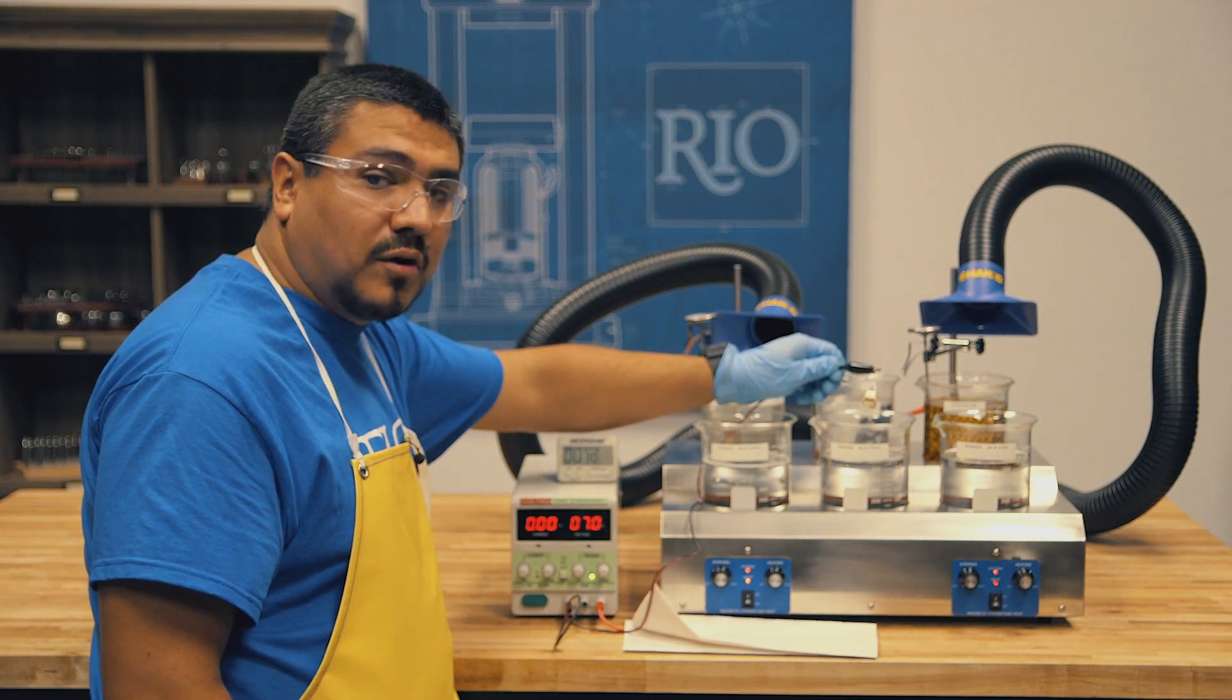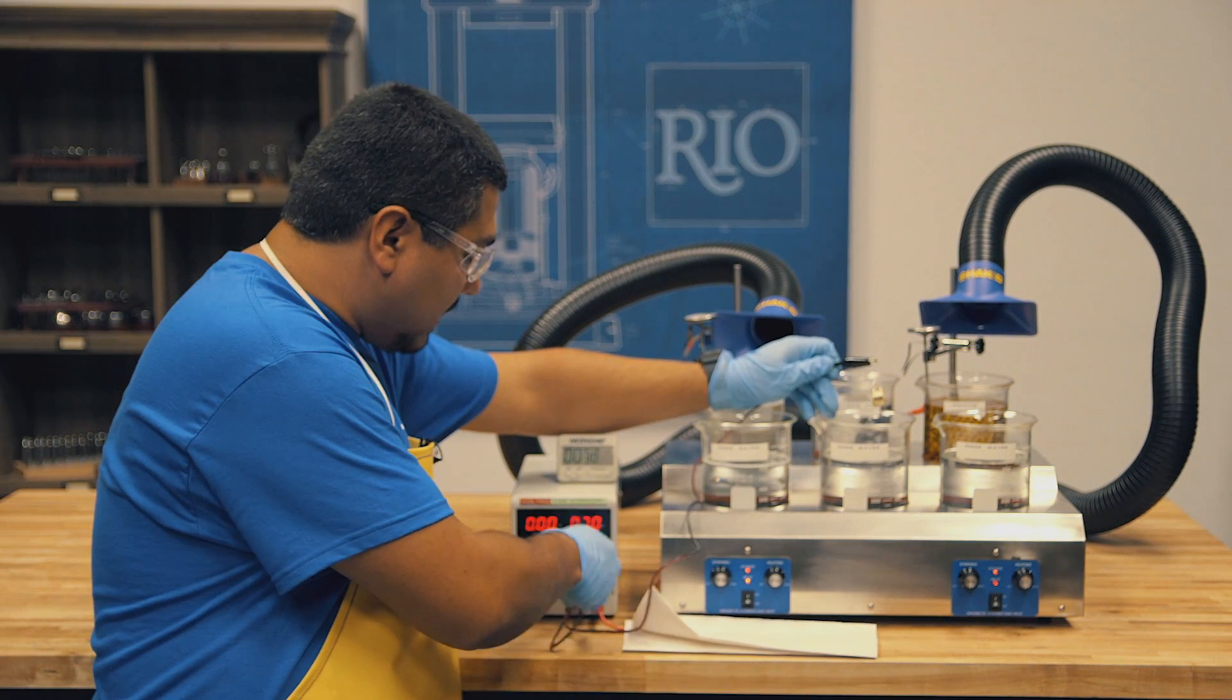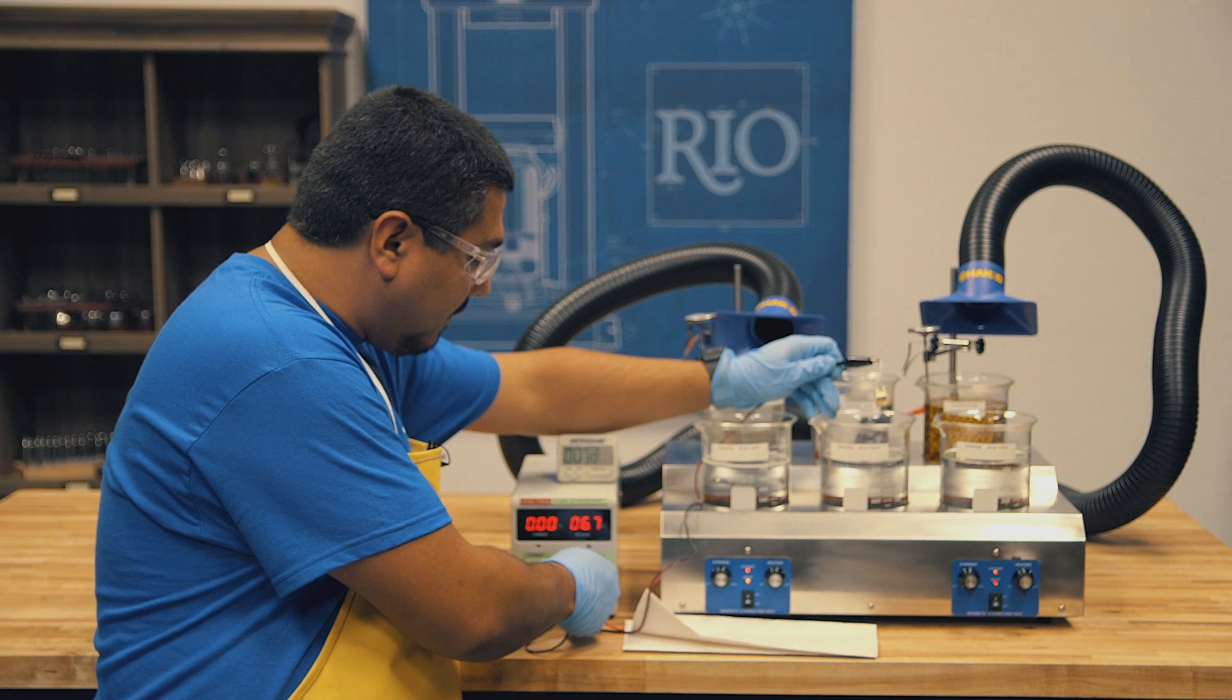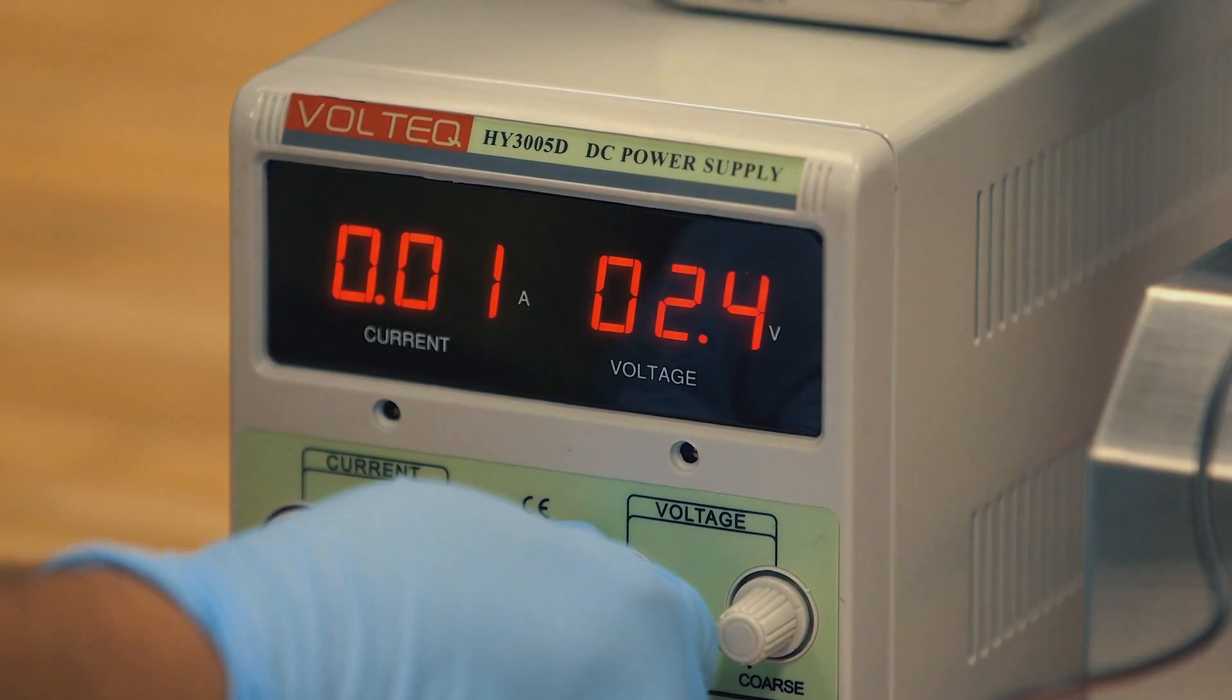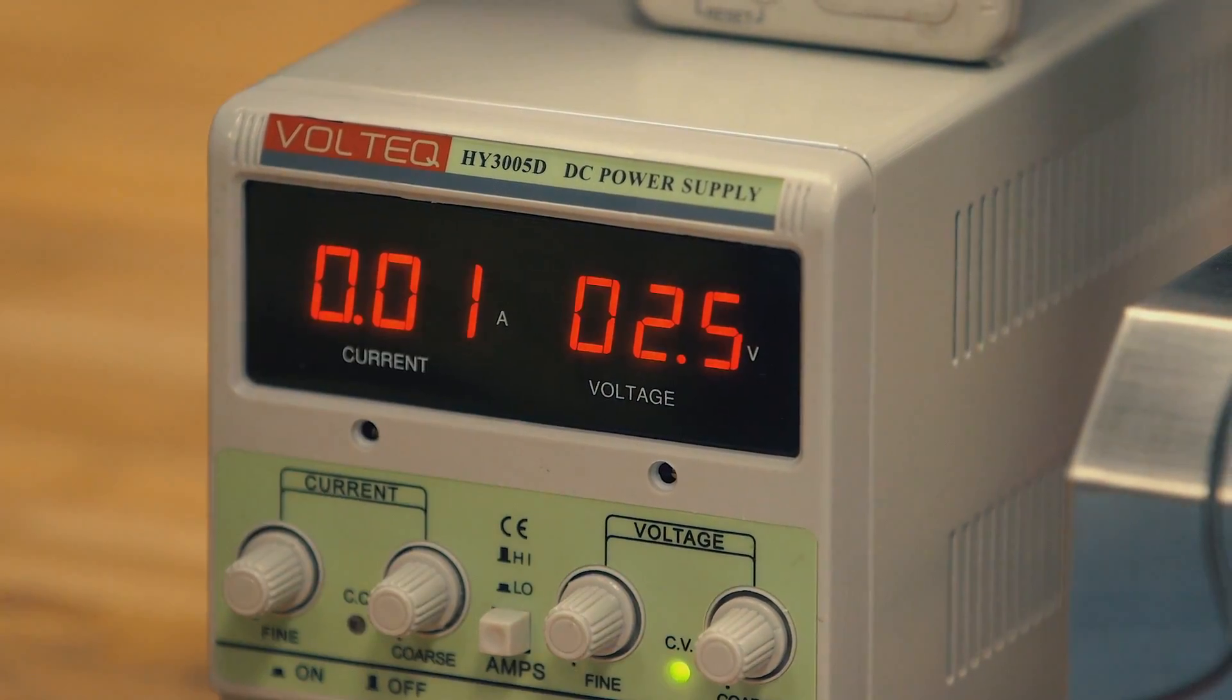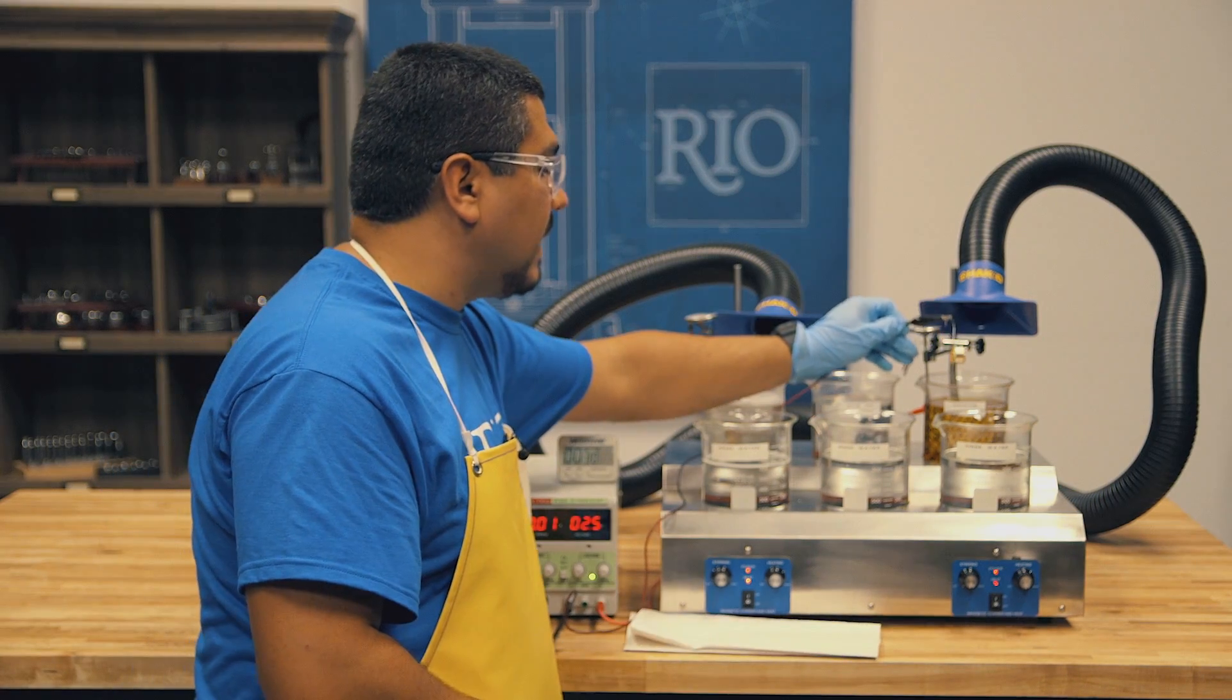And now we're ready for our rhodium plating. We will set our rectifier for two and a half volts. That's the recommended voltage for this rhodium solution, but others will be different. And we will plate for 30 seconds.